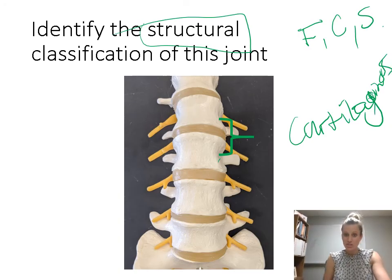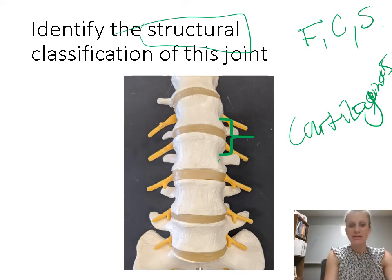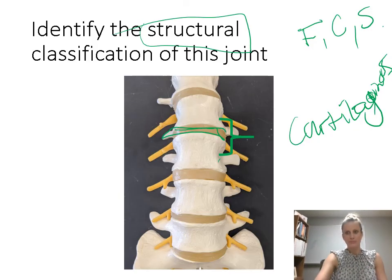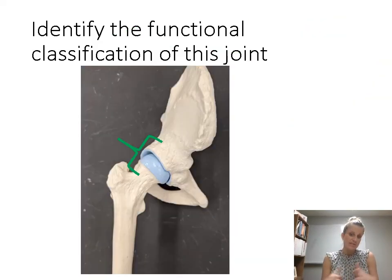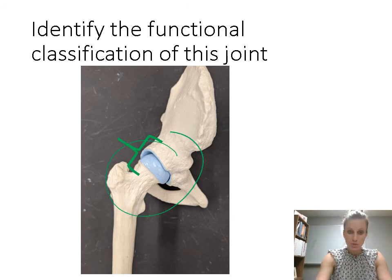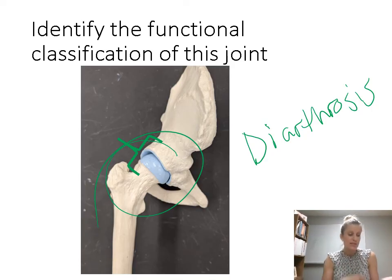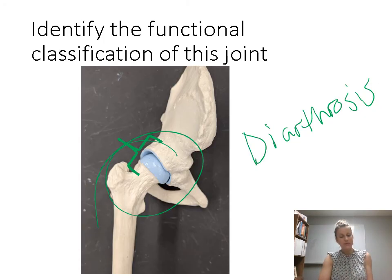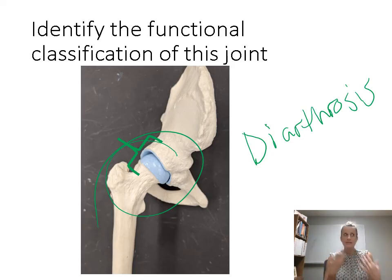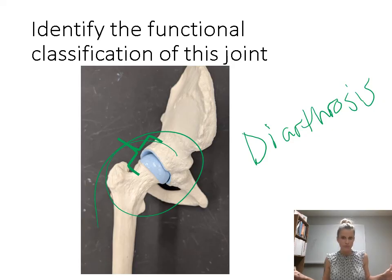Identify the functional classification of this joint — the functional classification is how much movement it allows. This is the hip joint, and the hip joint allows a lot of movement, so that's a diarthrosis. A diarthrosis allows a lot of movement; a synarthrosis allows no movement. The way to remember: a diarthrosis can be in all different positions, so D for different. Synarthrosis is always in the same position — S for same. Same position all the time, no movement whatsoever.